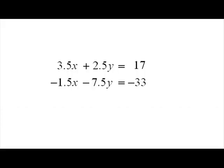We begin with two linear equations. The first one, 3.5x plus 2.5y is equal to 17, and the second one, negative 1.5x minus 7.5y is equal to negative 33.